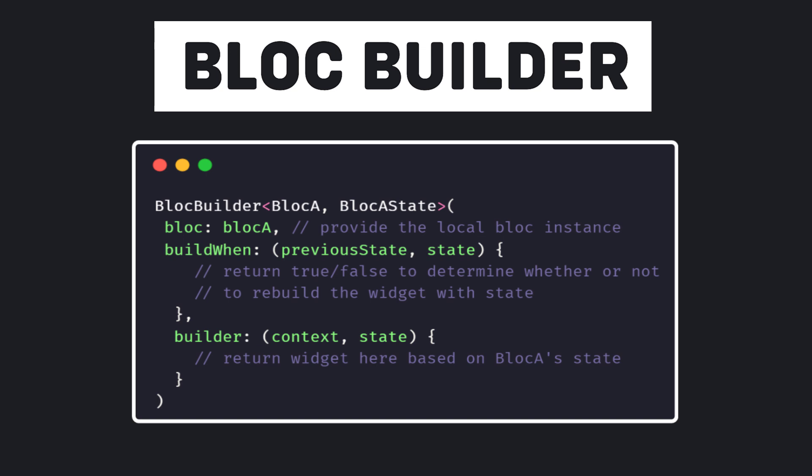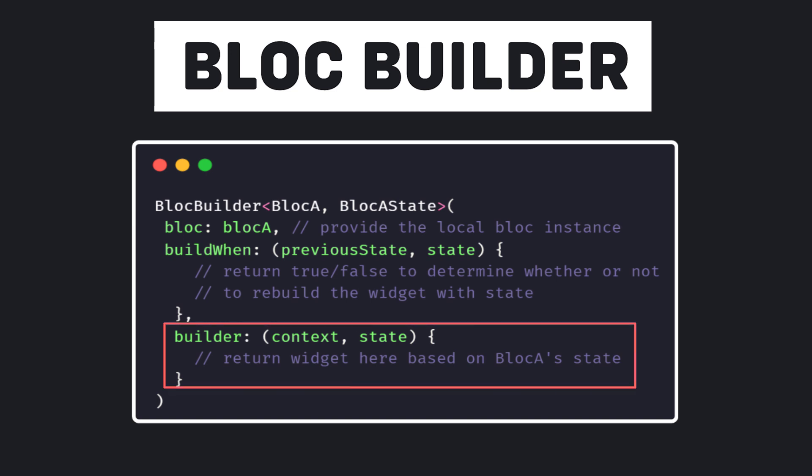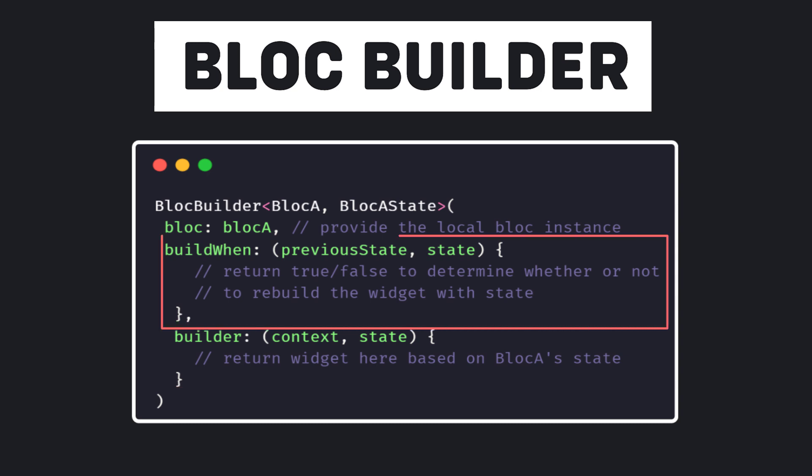BlocBuilder is kind of like StreamBuilder. It has a required field named builder that takes a method. That method's parameters are context and state, which is the current state of our bloc class. There is another field which is optional called buildWhen.